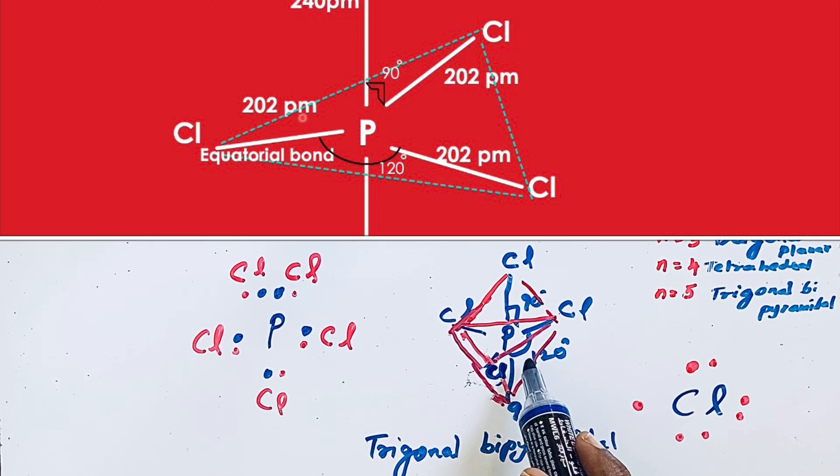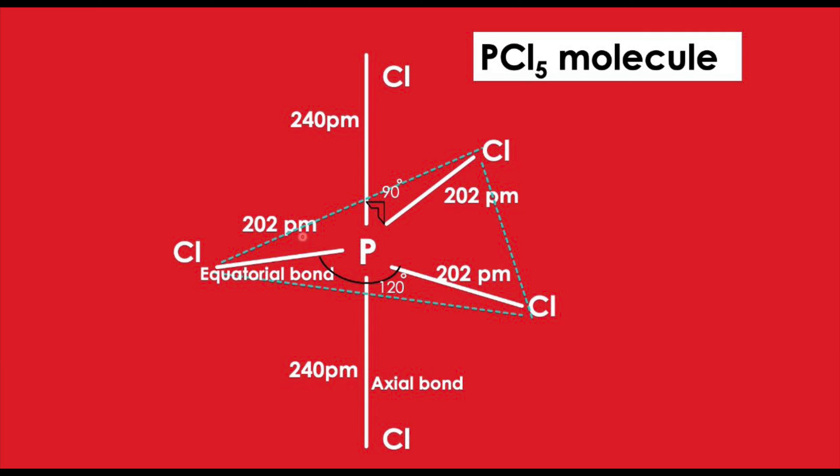Hence, in the PCl5 molecule, three of the bond pairs lie in the same plane at an angle of 120 degrees, and two bond pairs lie at right angle to each other, that means 90 degrees.